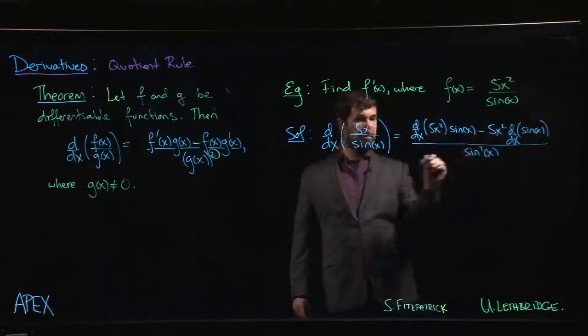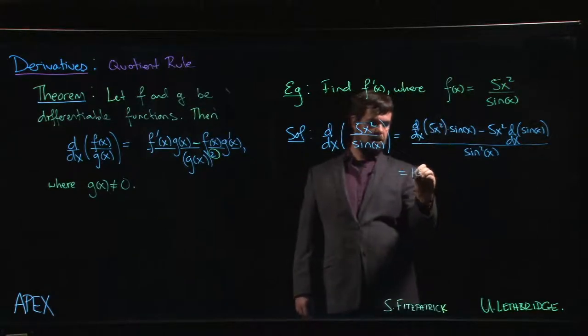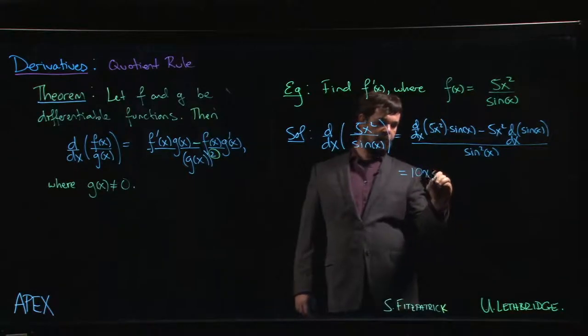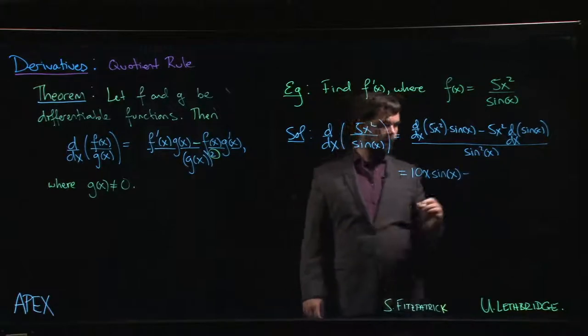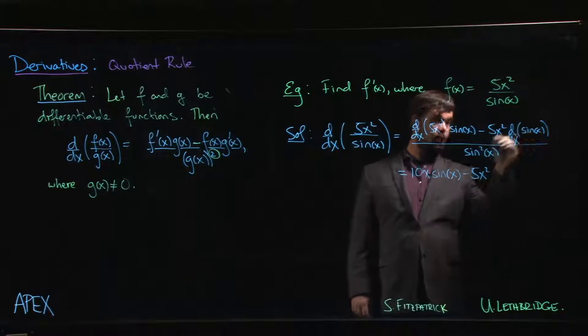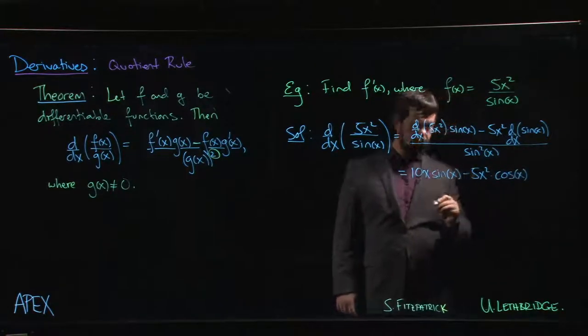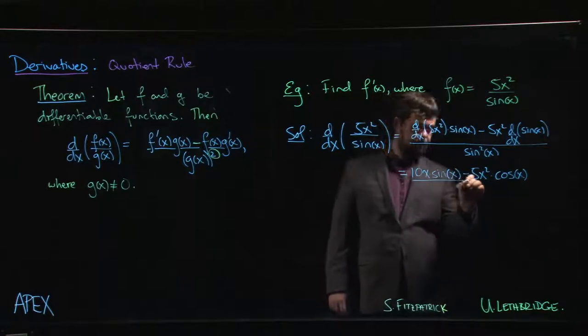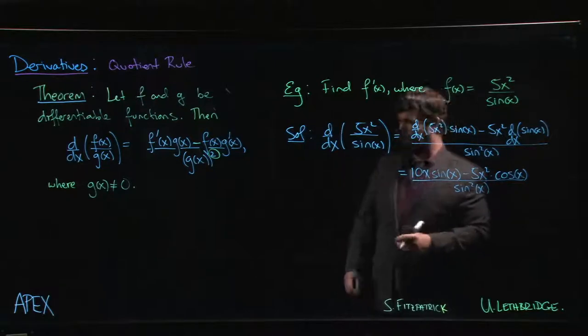Alright, we're not done. We still have some derivatives to take, so let's take those. The derivative of x squared is 2x times 5 gives us 10x times sine x minus 5x squared times the derivative of sine, which is cosine. And the whole thing is over sine squared x.